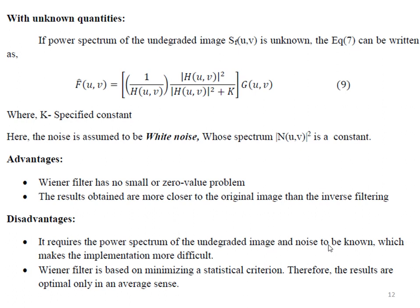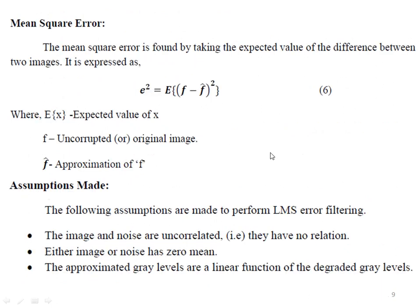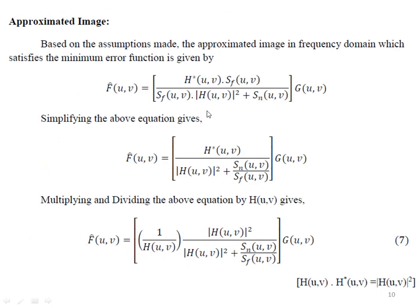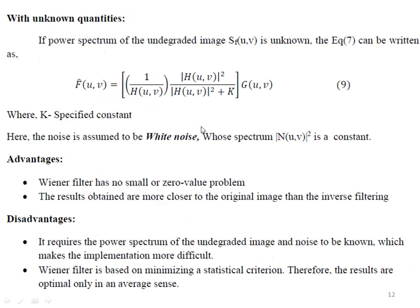The disadvantage of the Wiener filter is that it requires knowledge of the power spectrum of the original image and the power spectrum of noise. This is a statistical method and the result is optimal only in the average sense. This is the main disadvantage of the Wiener filter.